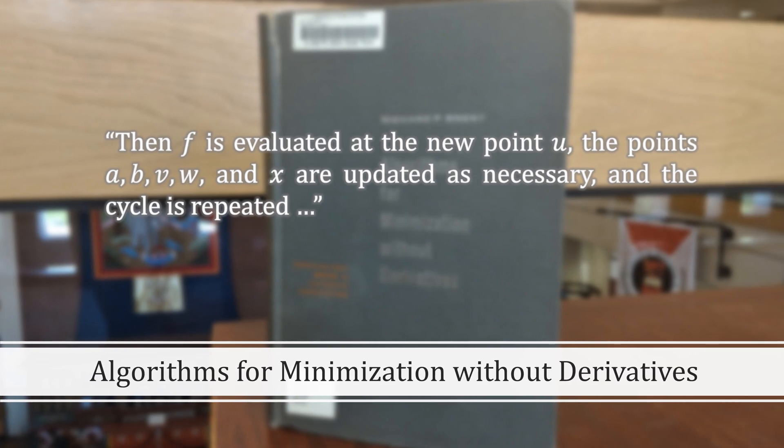Brent again. Then, f is evaluated at the new point u. The points a, b, v, w, and x are updated as necessary, and the cycle is repeated.